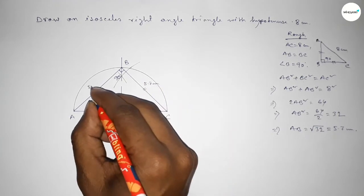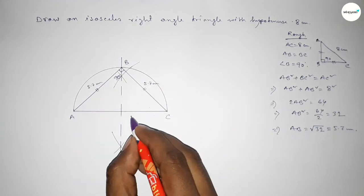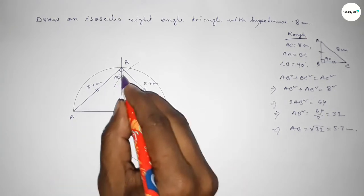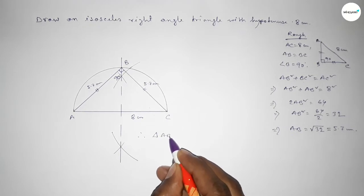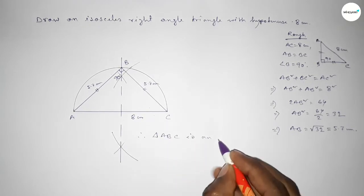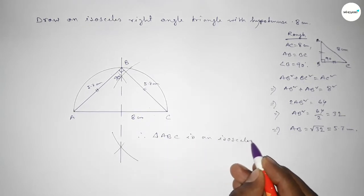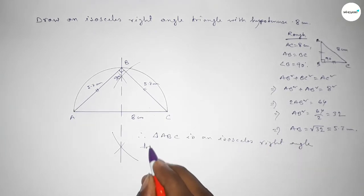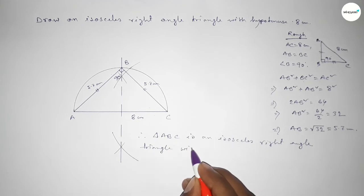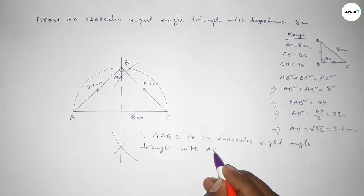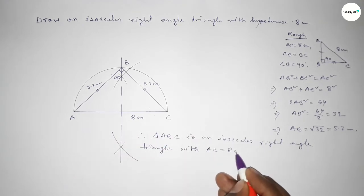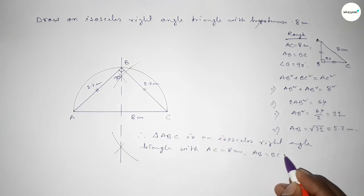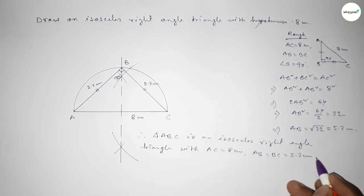So both sides AB and BC are 5.7 centimeter approximately, and AC equals 8 centimeter. Therefore triangle ABC is an isosceles right angle triangle constructed with only the given hypotenuse AC equal to 8 centimeter, and the two equal sides AB equals BC equals 5.7 centimeter.